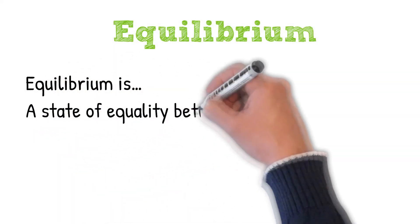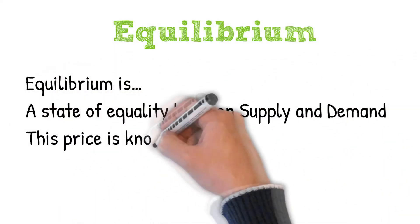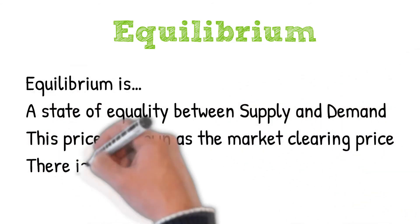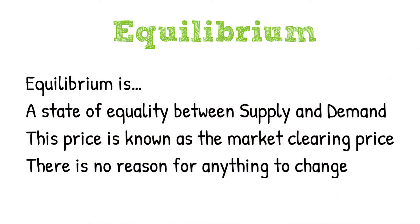Equilibrium is where demand and supply meet — this sets the market price and quantity for a good or service. X truly does mark the spot. Equilibrium is a state of equality between supply and demand; this is known as the market clearing price, and there's no reason for anything to change.